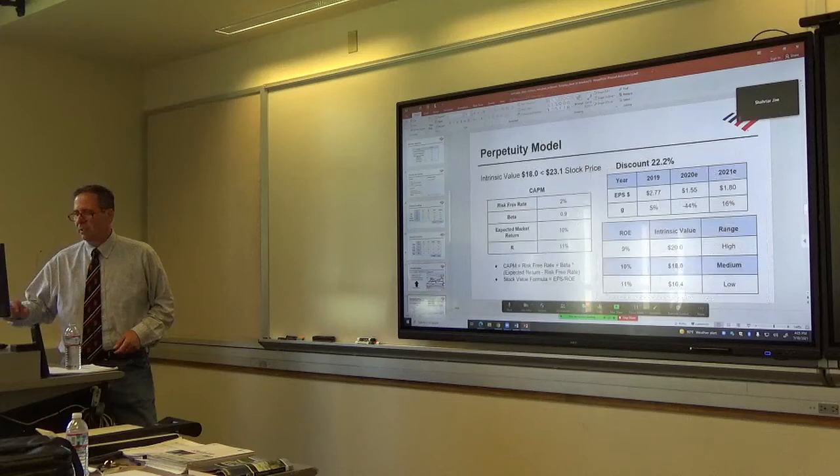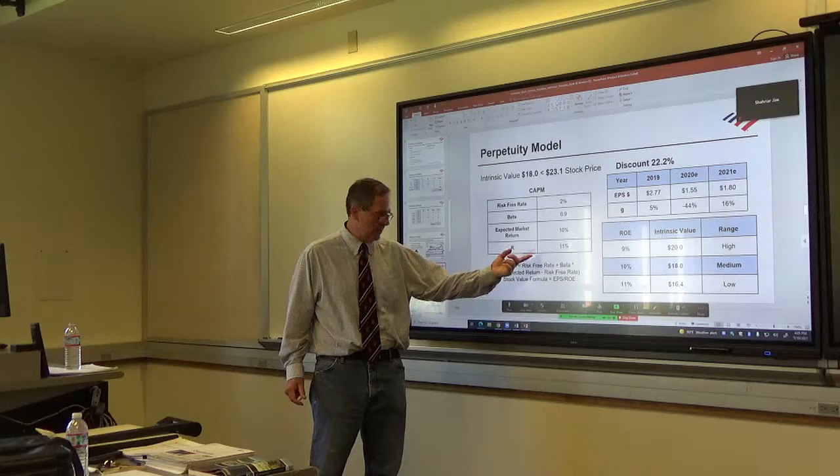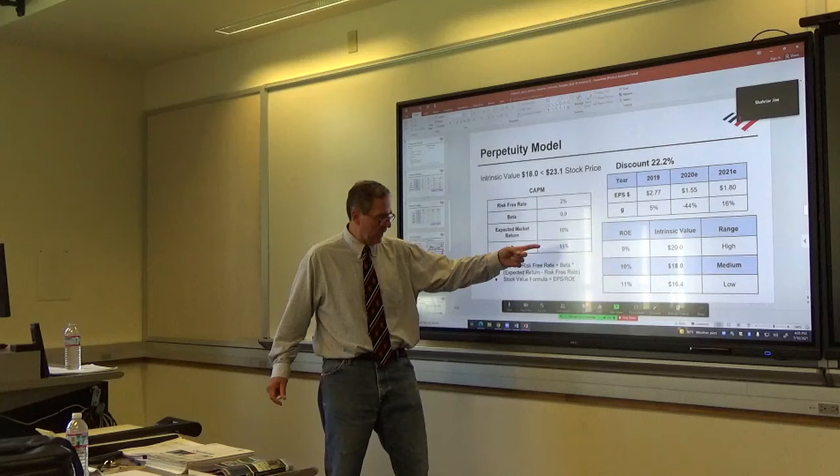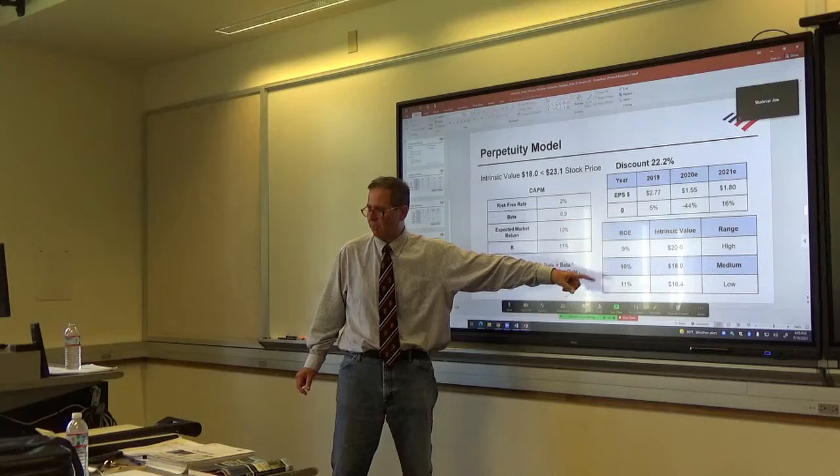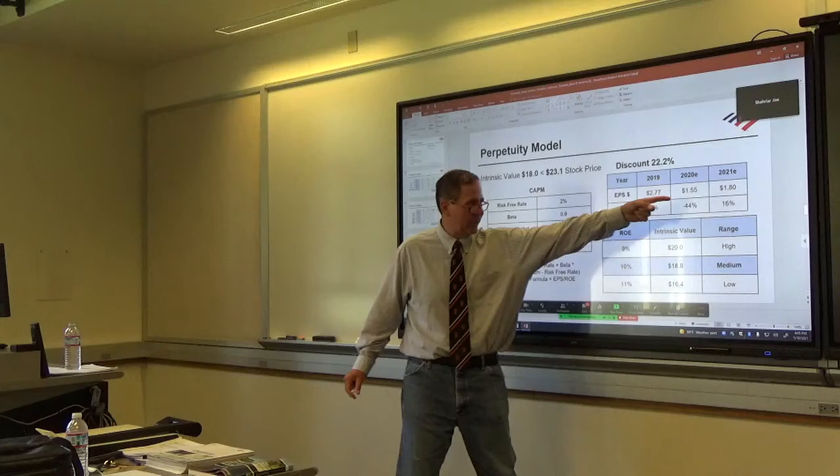The next is the perpetuity model. You use the capital asset pricing model to come up with the cost of the equity, which is your highest discount rate. You use the weighted average cost of capital to come up with your minimum sensitivity on the discount rate. And then usually the market, expect a return on the market, usually is somewhere in between.